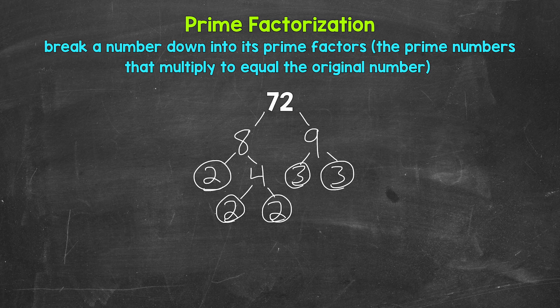And that's the prime factorization of 72. We are done. We cannot break anything else down any further. We have all prime numbers. So let's write this out as 72 equals, and then I'm going to write our prime factors here in order from least to greatest, and we are multiplying them. So we have three twos, so two times two times two, and then two threes, so times three times three.